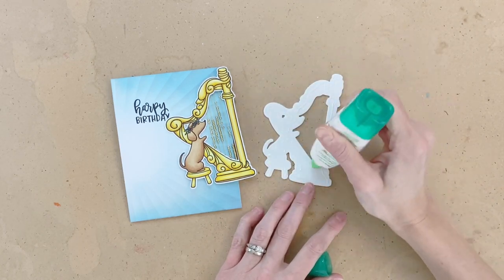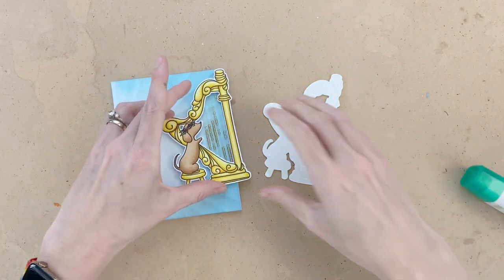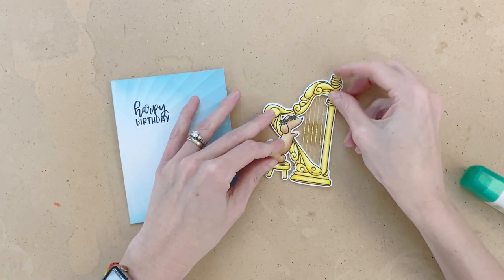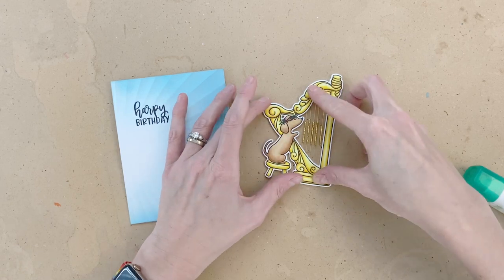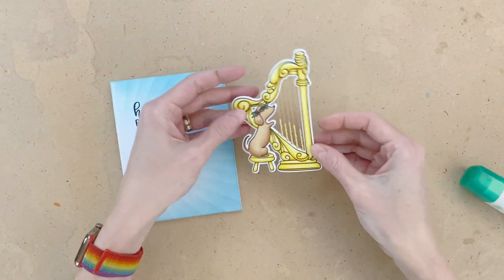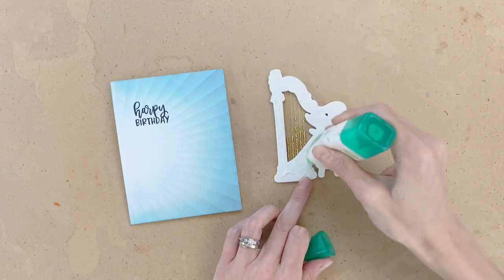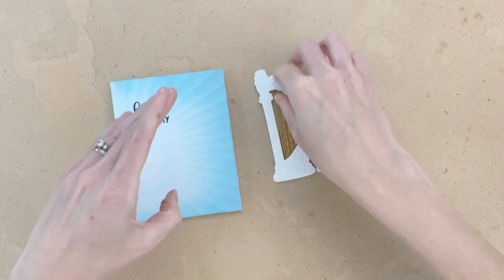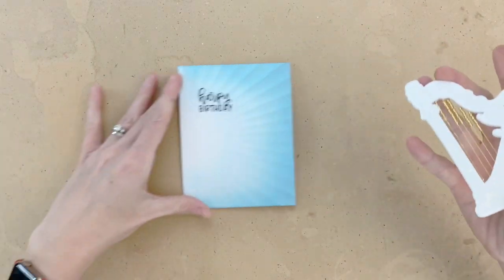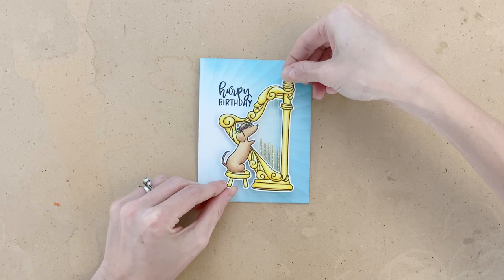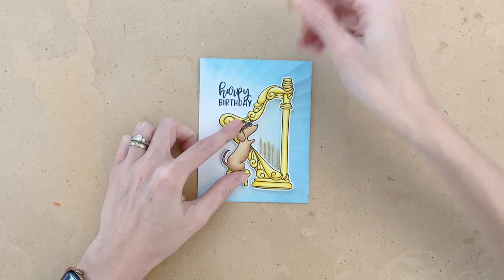Now I'm going to glue our bead cascade harp piece to the craft foam that we cut earlier. Again I'm going to use liquid adhesive for that and just glue those two together. The dimension here just makes sure those beads really move freely and don't get kind of caught on the card front itself. Then I'm going to add some liquid glue to the back side of the craft foam and then just add this to the front of our card. Just turn it over here, kind of center it.